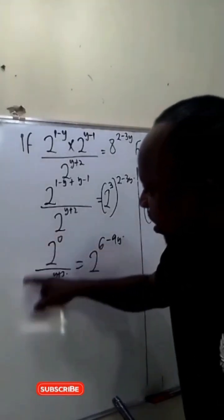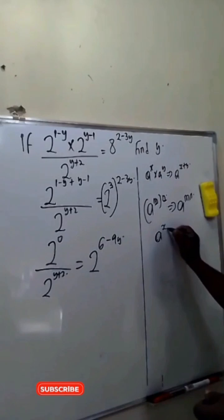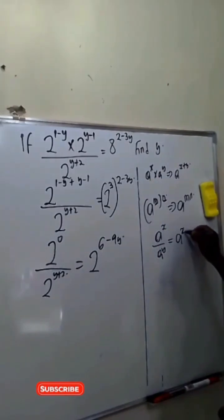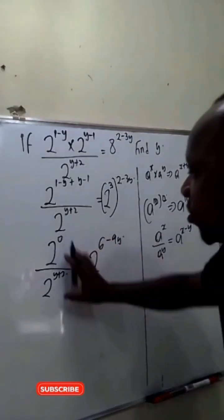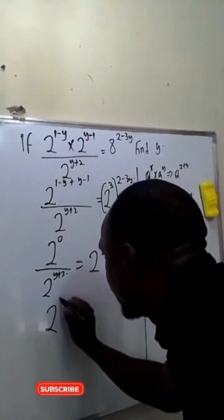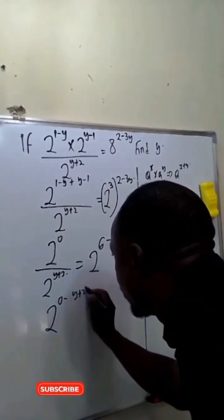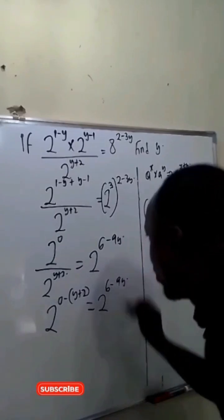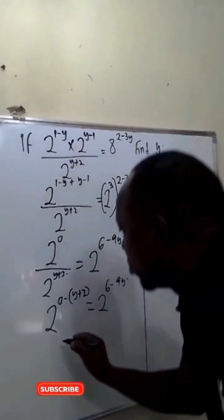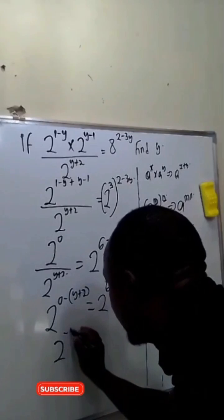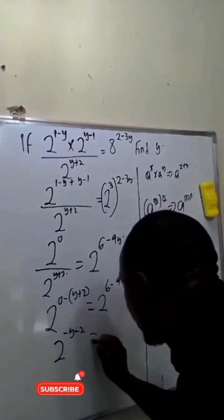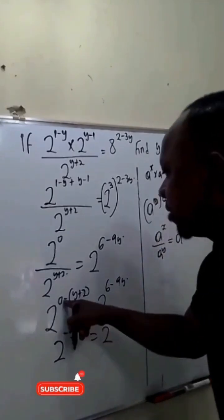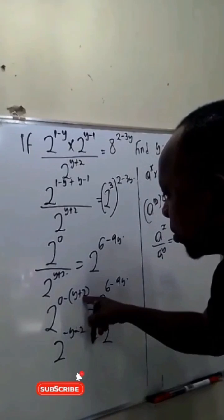To further simplify, we apply the quotient law, which states that a raised to power x over a raised to power y equals a raised to power x minus y. Applying this, the left-hand side becomes 2 raised to power 0 minus y plus 2, which simplifies to 2 raised to power minus y minus 2, equaling 2 raised to power 6 minus 9y.